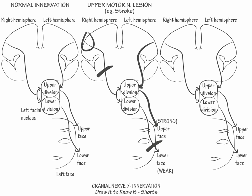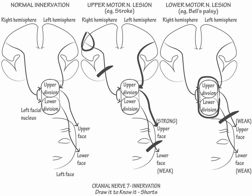Indicate that both the left upper and lower face are weak. Innervation for the left upper and left lower face synapses within the left facial nucleus, so show that injury to the lower motor neuron or nerve, called Bell's palsy, will cause a complete ipsilateral facial palsy.